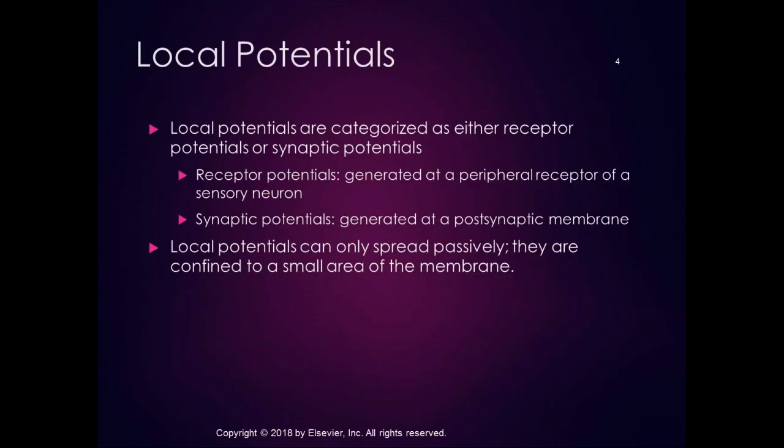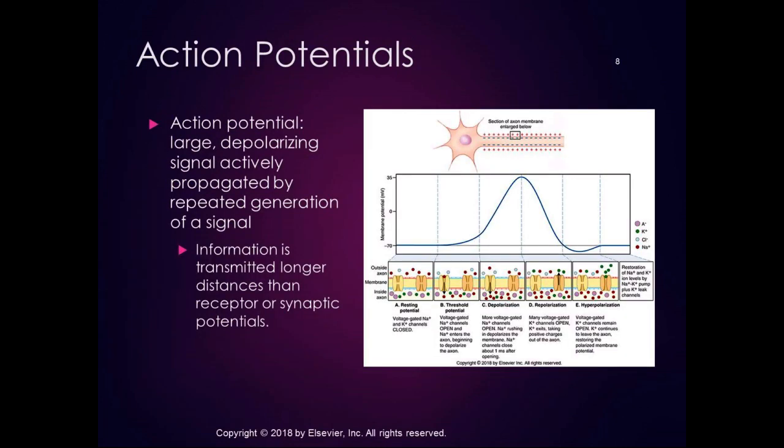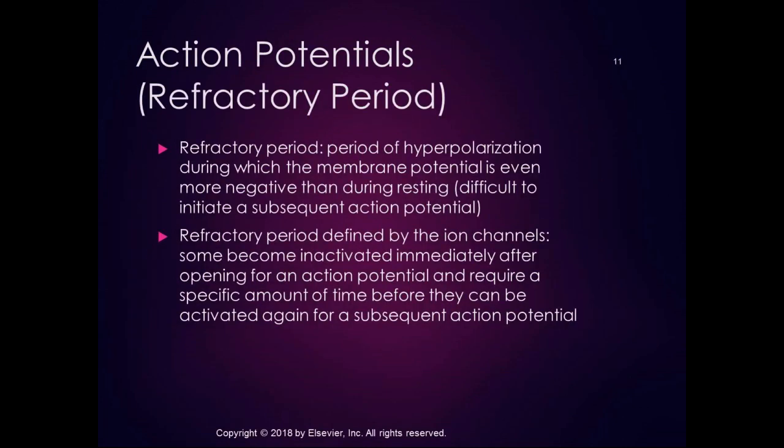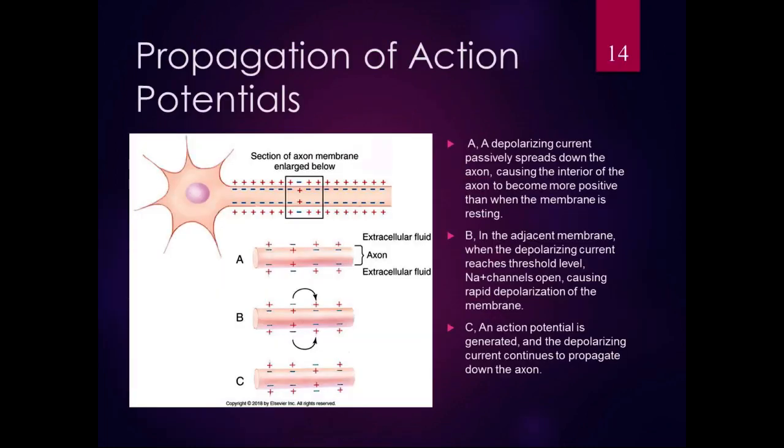In the last section we talked about local potentials and action potentials and how an action potential is propagated down the cell. Here's our nerve cell — it's more positive on the outside, more negative on the inside. A depolarizing current passively spreads down the axon, causing the interior to become more positive, going from minus 70 millivolts to minus 55 millivolts. In the adjacent membrane, when the depolarizing current reaches threshold levels, sodium channels open — those voltage-gated sodium channels — causing rapid depolarization of that section of the membrane.